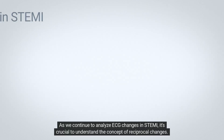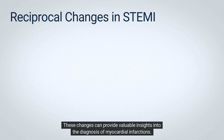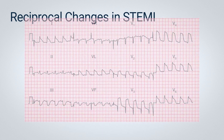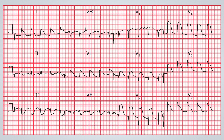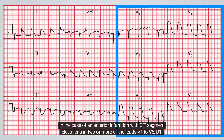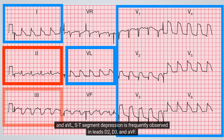As we continue to analyze ECG changes in STEMI, it's crucial to understand the concept of reciprocal changes, which can provide valuable insights into the diagnosis of myocardial infarctions. Reciprocal changes refer to the fact that the anterior and inferior leads often display inverse patterns. In the case of an anterior infarction with ST-segment elevations in two or more of the leads V1 to V6, D1, and aVL, ST-segment depression is frequently observed in leads D2, D3, and aVF.